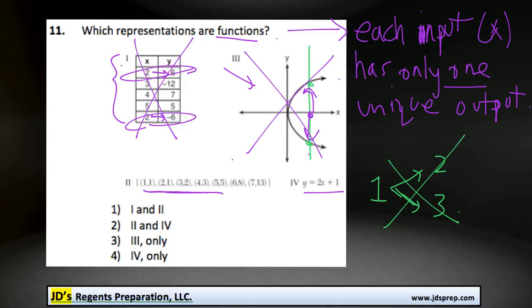Looking at the set of ordered pairs here, looking at our inputs, we've got 1, 2, 3, 4, 5, 6, 7. So clearly there's no repeated inputs that give a different output. So that one's good.